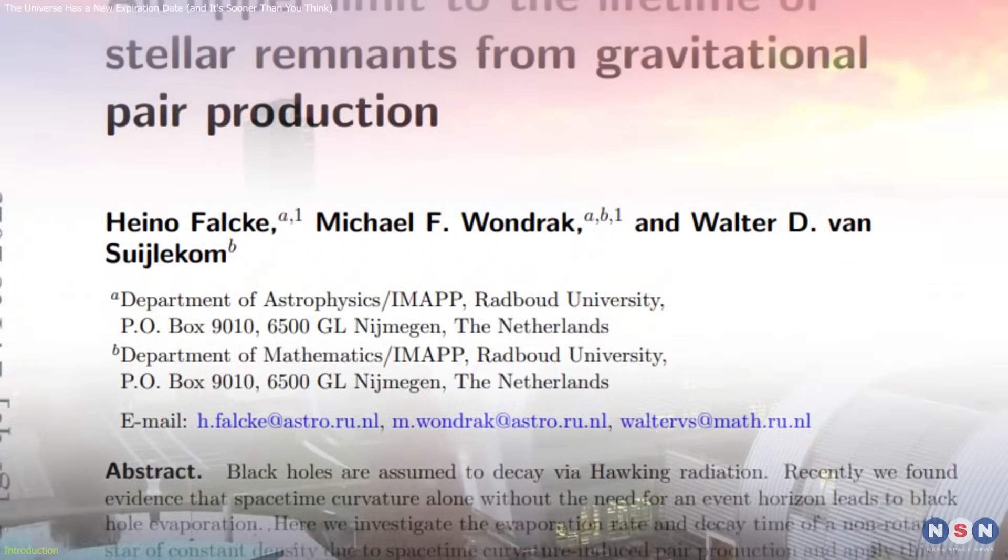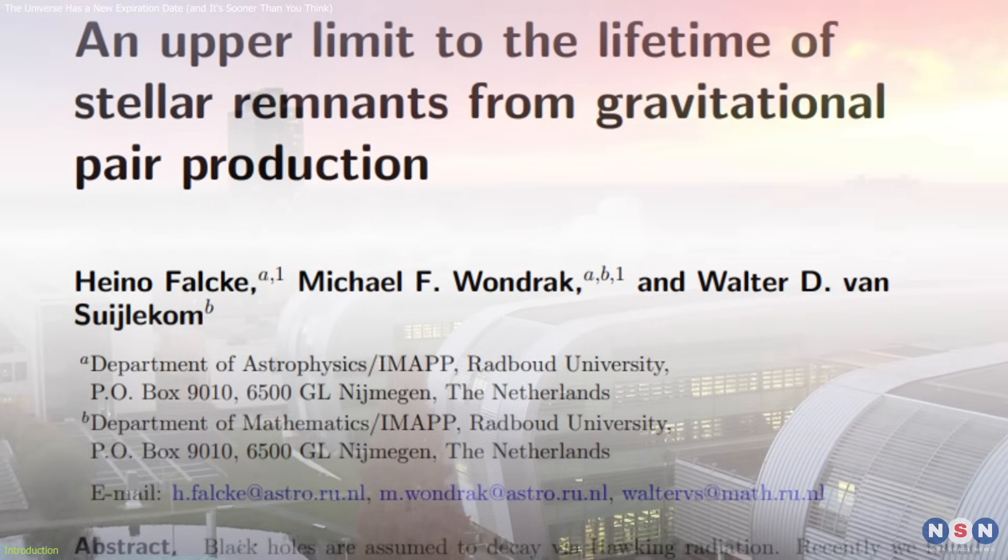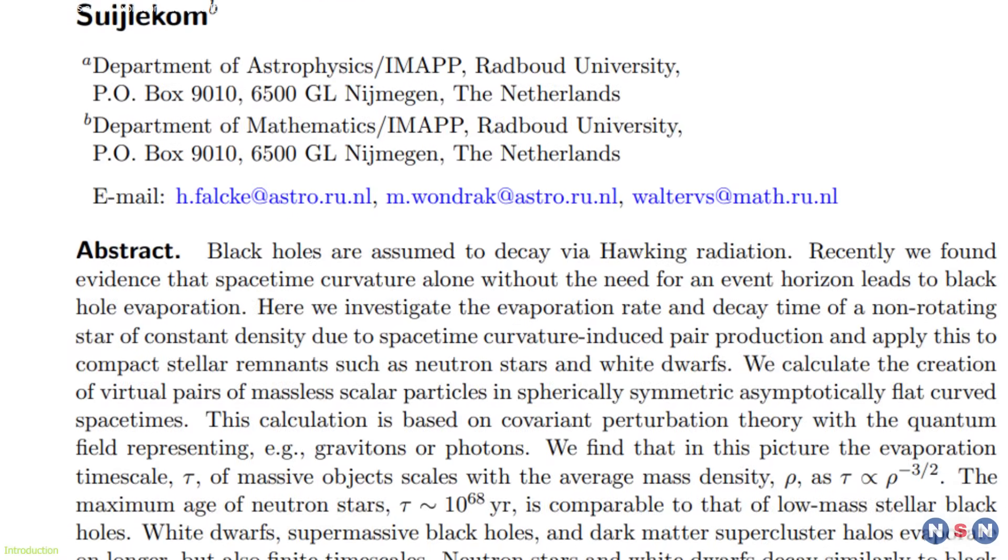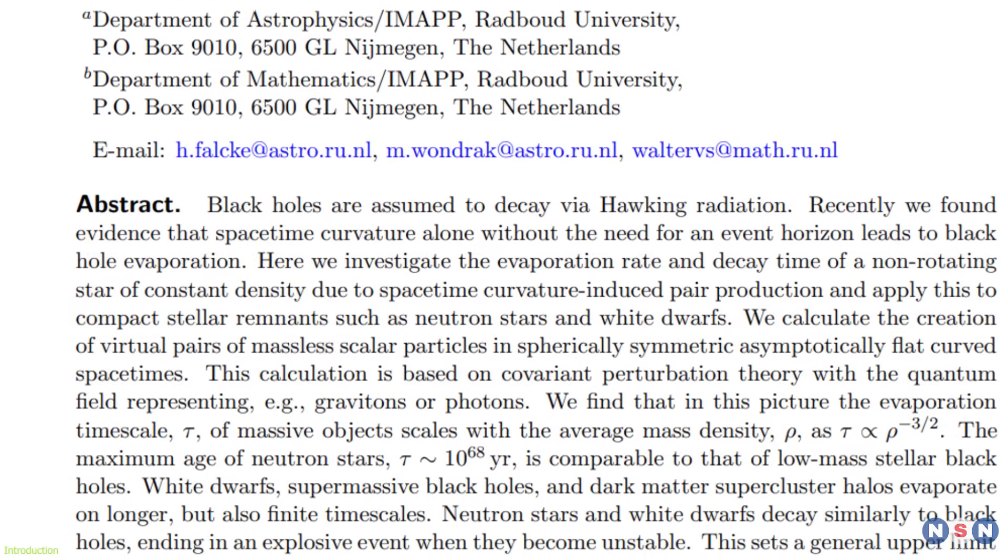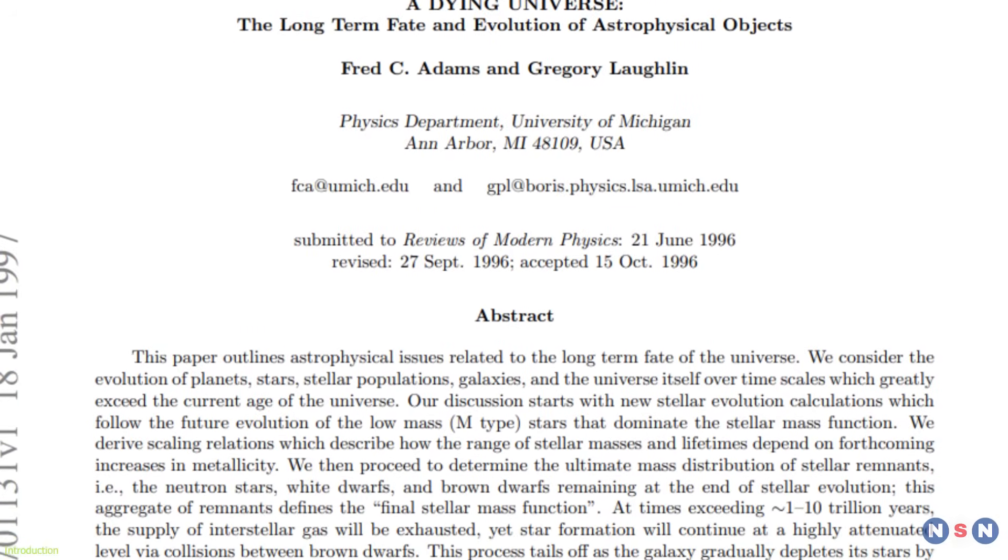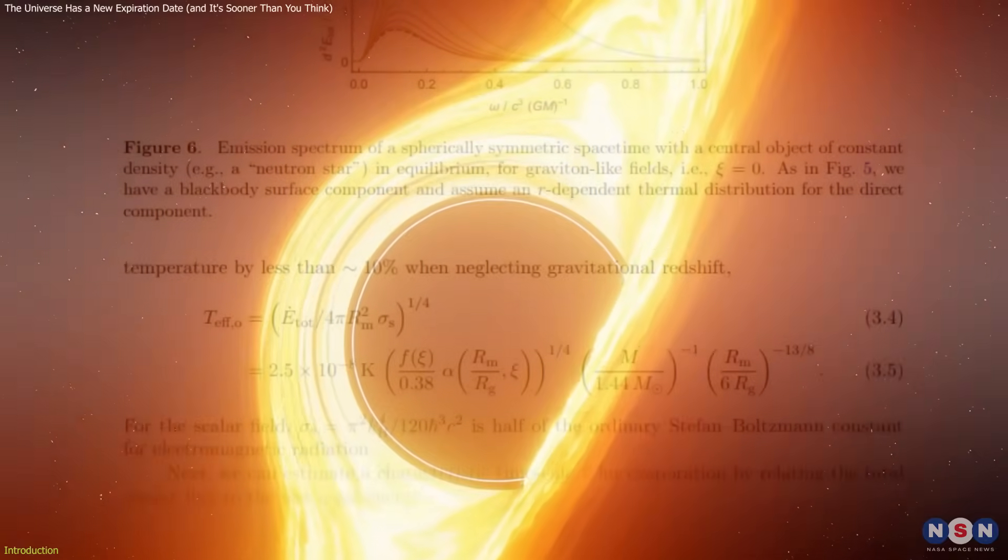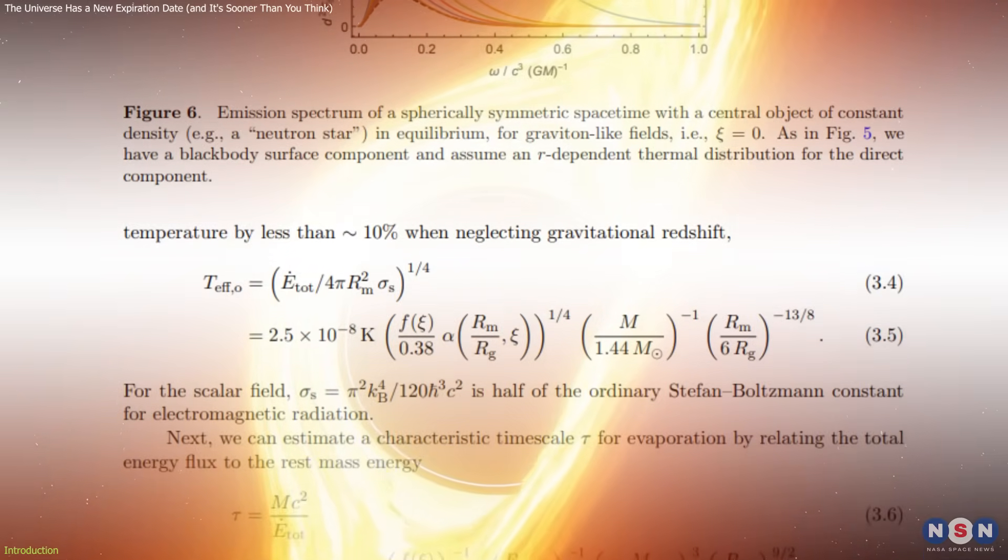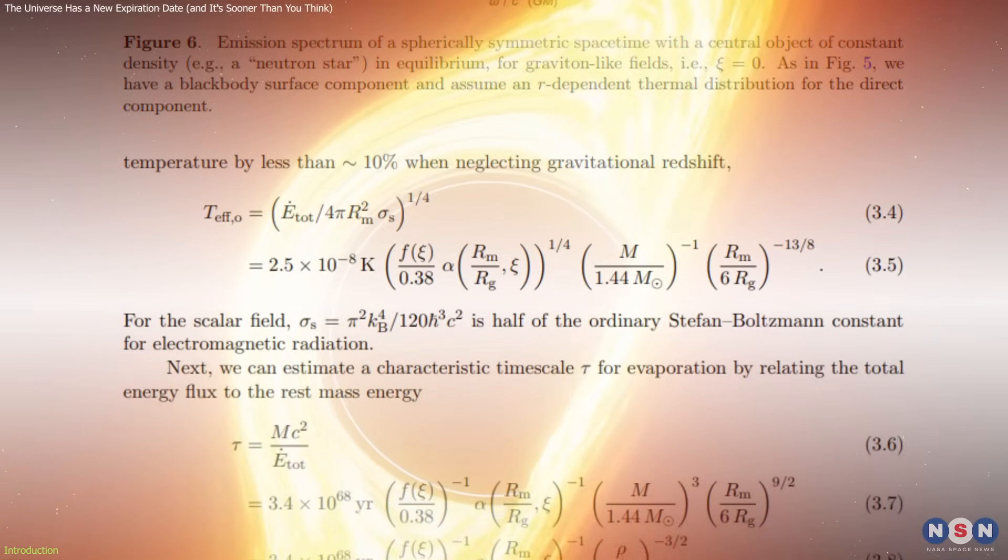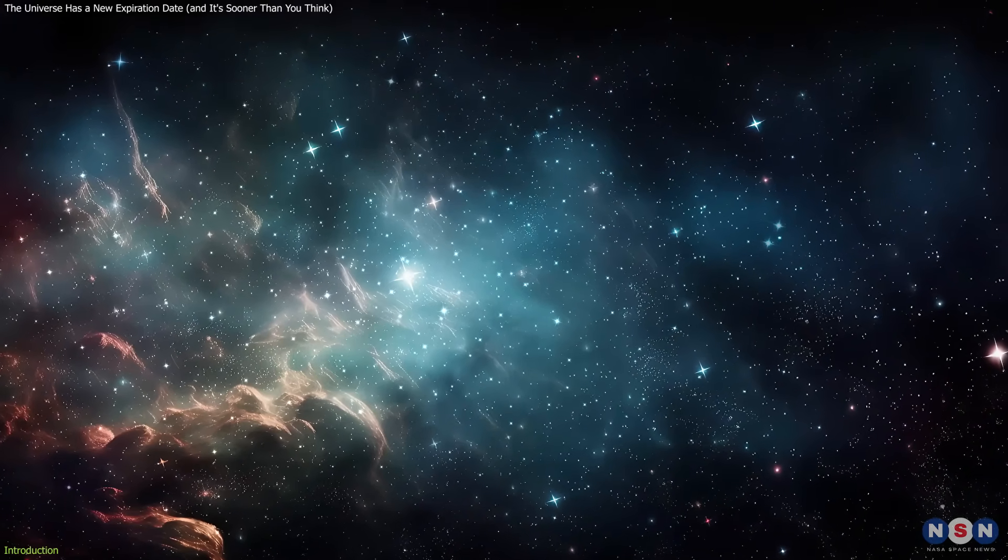A groundbreaking study by a trio of Dutch researchers at Radboud University has turned the cosmic clock forward. They've concluded that the universe may decay in around 10 to the power of 78 years, far sooner than the previously predicted 10 to the power of 100 years. Their calculations, rooted in a bold reinterpretation of Hawking radiation, don't just challenge what we thought we knew.